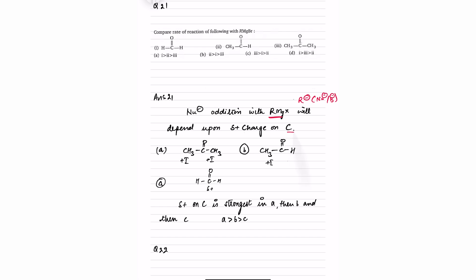We have three compounds: CH3COCH3 (a ketone), where delta positive charge is reduced due to the +I effect of two CH3 groups. For an aldehyde, only one +I is present so delta positive is relatively higher. For formaldehyde, there is no +I from hydrogen, so delta positive on this carbon is the highest. Hence the reaction is fastest for formaldehyde, then aldehyde, then ketone.